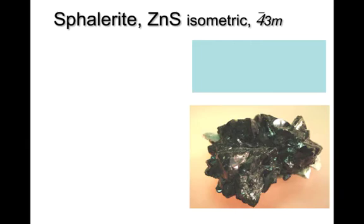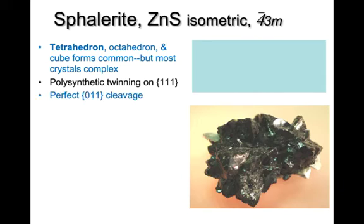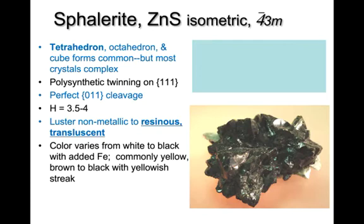Sphalerite on the lower right is a typical example. It forms tetrahedrons, octahedrons, rarely cubes, mostly complex crystals with poor crystal morphologies. Polysynthetic twinning on the 1-1-1 plane is very common, and it has perfect cleavage on 0-1-1. Hardness is 3.5 to 4, intermediate among the sulfides. The luster is characteristic — non-metallic to resinous and translucent — and colors vary from white to black with increasing iron content. Commonly, sphalerite is yellow to yellow-brown with a yellowish to yellowish-brown streak.